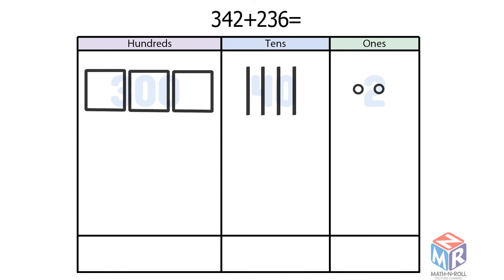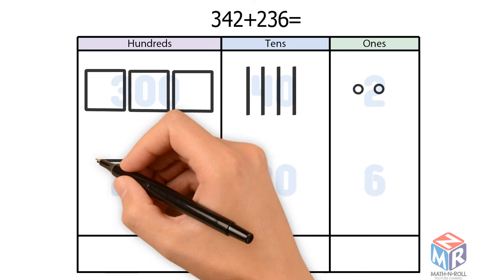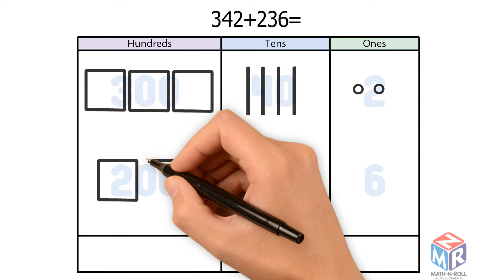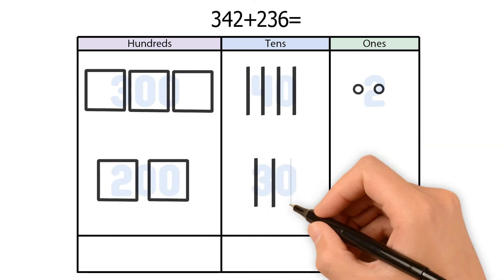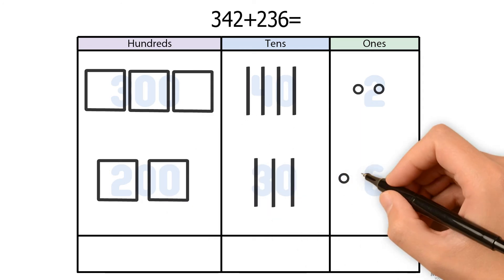236 has 2 hundreds, so 2 squares, 3 tens, so 3 bars, and 6 ones, so 6 circles.